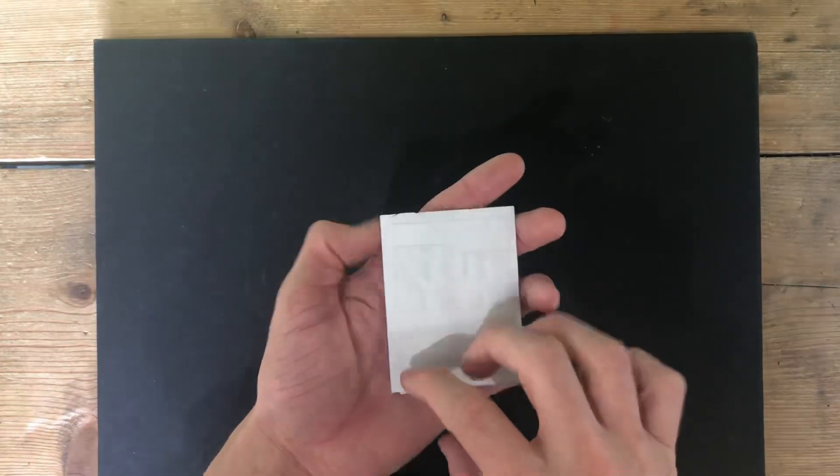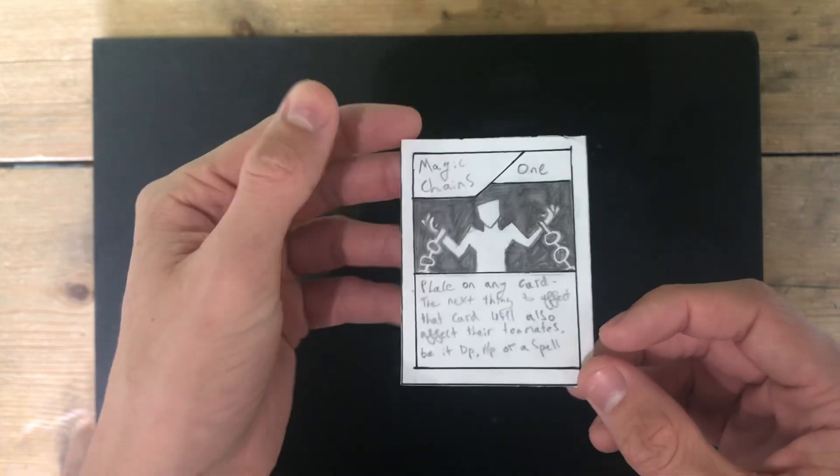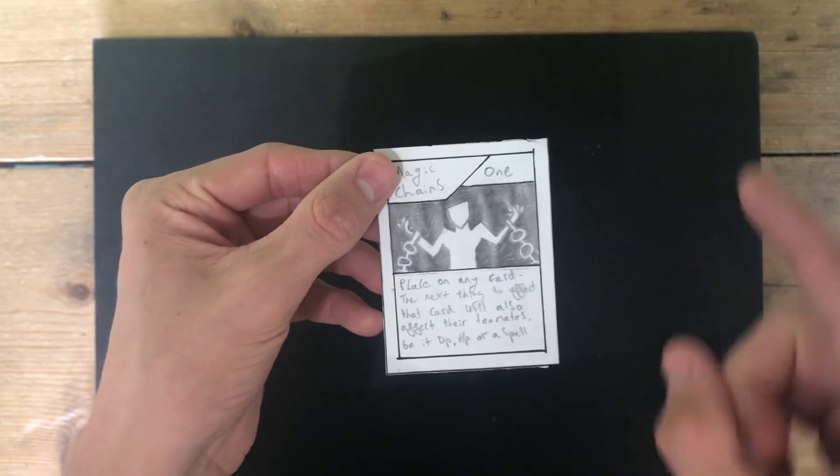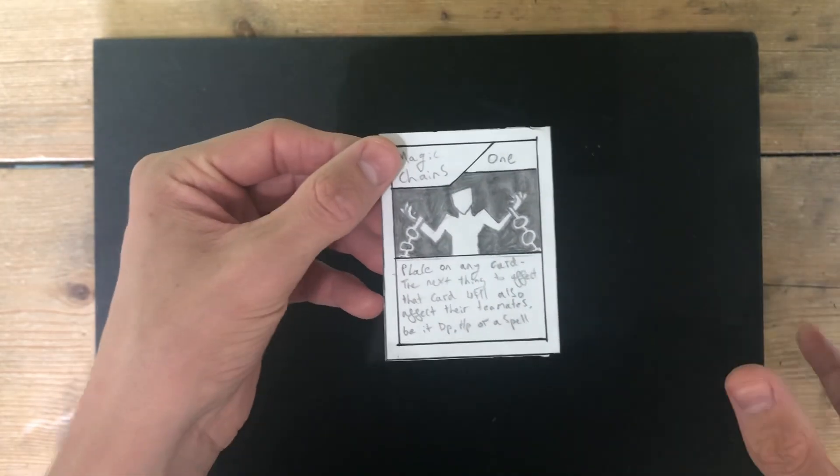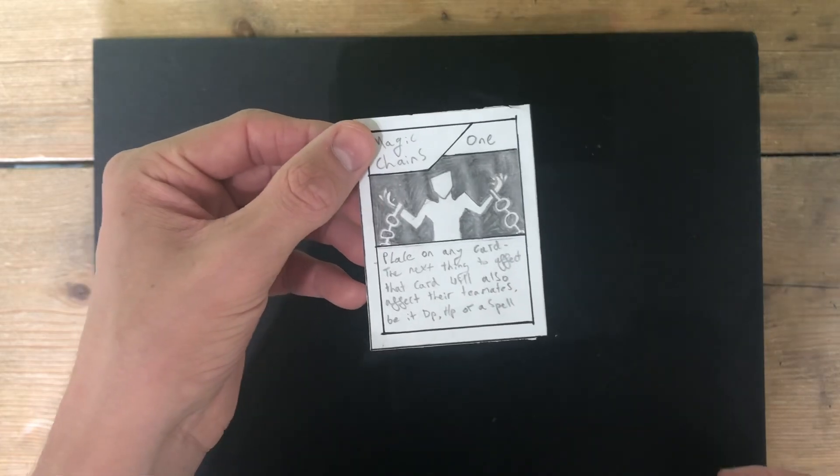The final card, coming in this Gnaw update, before I reveal to you the new mechanic, is the Magic Chain. You'll play it on any card you want. And the next thing to affect that card will also affect their teammates, be it damage, HP, or spells.